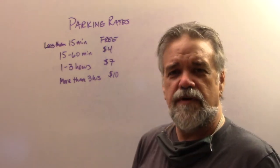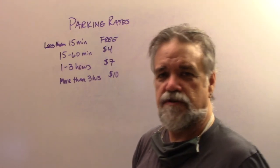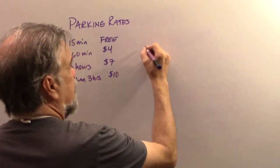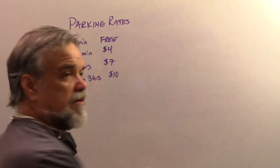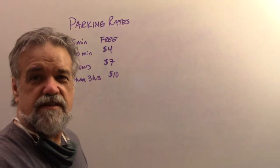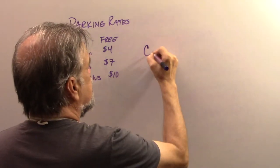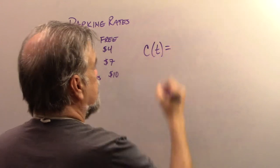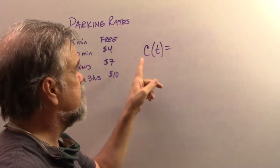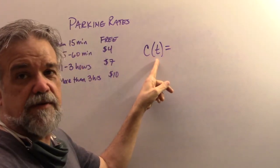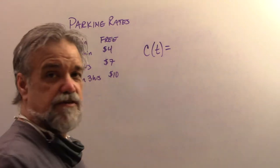Now, how would I write that as a function? Well, I would say the rates let's call it C, C of T. C stands for cost. T stands for time. It's going to be measured in minutes. So here's how I write this.